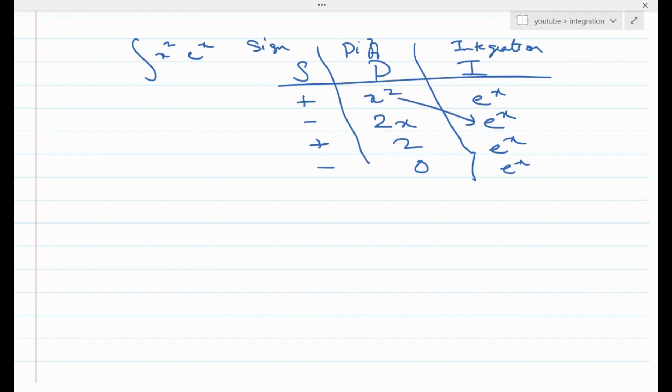Now are you ready for the answer? We all we need to do is just diagonally multiply this and apply the sign. So our answer for integral x square e to the power x is nothing but x square e to the power x minus 2x e to the power x plus 2 e to the power x plus c.